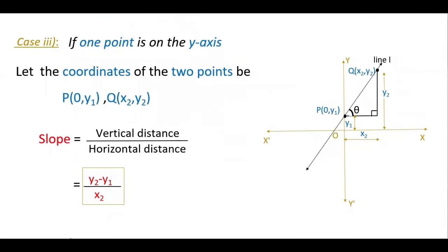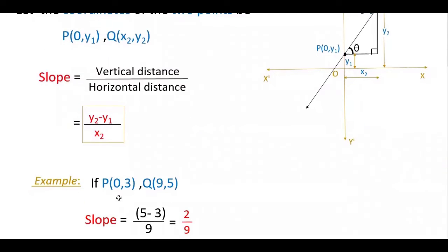In the next case, if one point is on the y-axis, then the x-coordinate is 0, so we assume this point as P(0, y1) and the next point is x2, y2. We have to find the slope for this line. Let this angle be theta. The vertical distance is y2 minus y1, but the horizontal distance is x2 minus x1, but x1 is 0, so it is x2. So the slope is y2 minus y1 by x2. For example, if you take two points P(0, 3) and Q(9, 5), then slope is equal to 5 minus 3 by 9 minus 0, which equals 2 by 9.